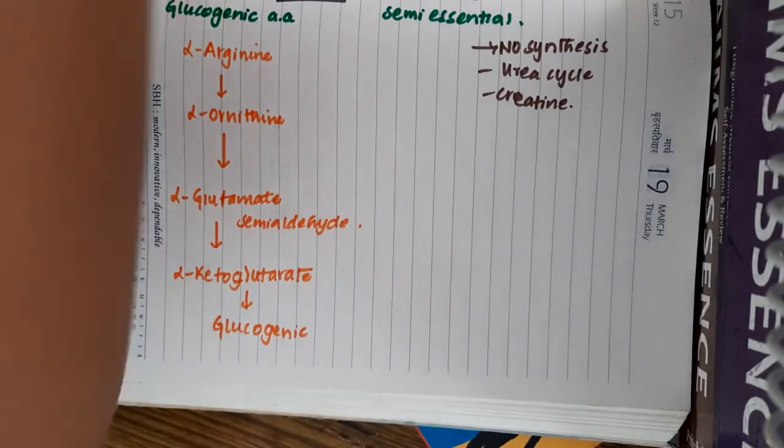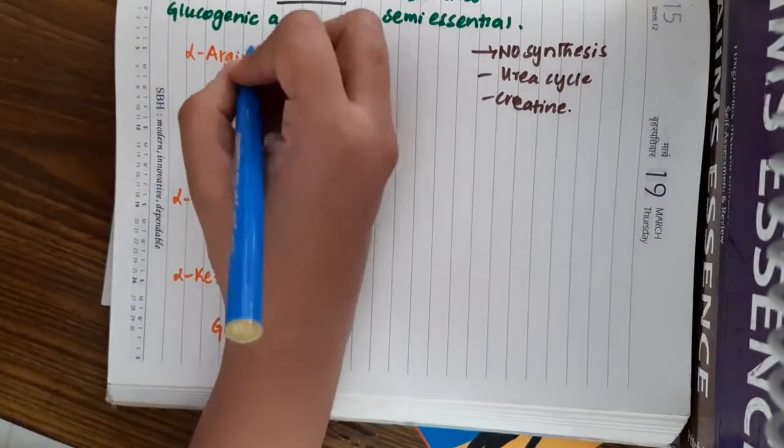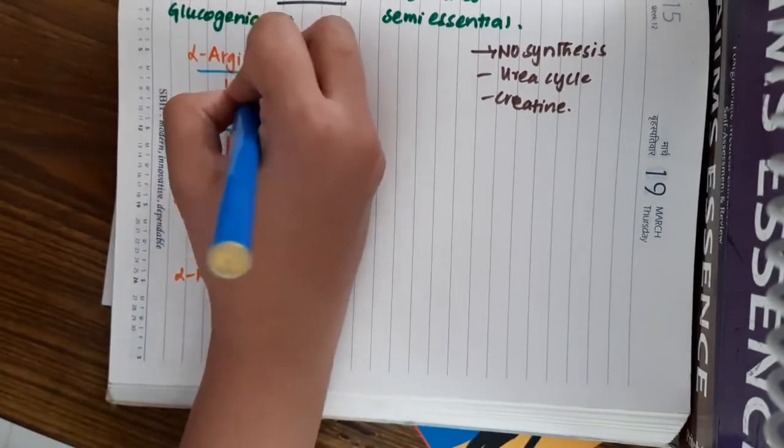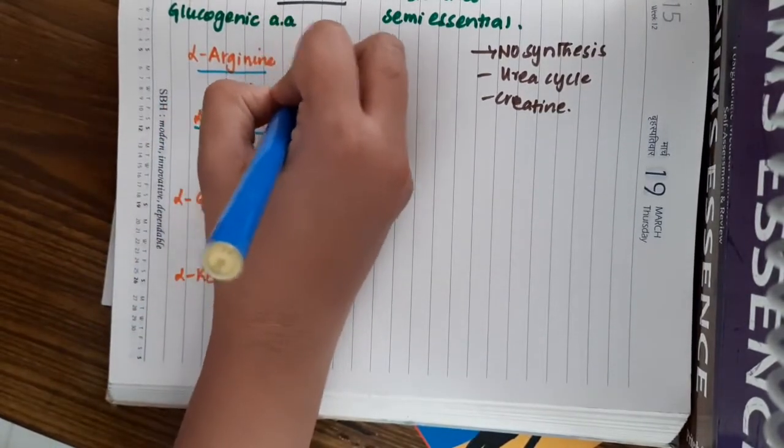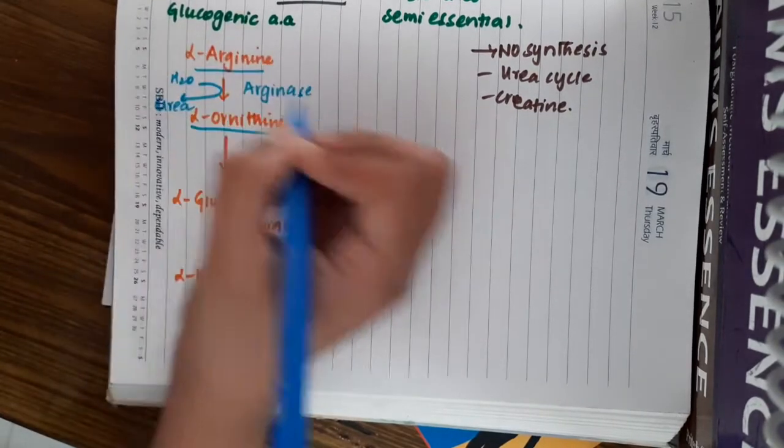If you see this pathway, I will also put in the enzymes. L-arginine gets converted to L-ornithine in the presence of the enzyme arginase and during this process, water is added and urea is released.